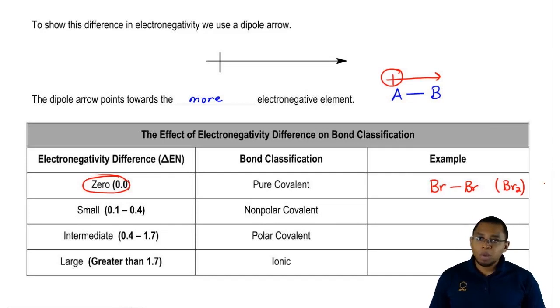If the difference is small between 0.1 and 0.4, then we call it a nonpolar covalent compound or nonpolar covalent bond. A good example we just saw is carbon and hydrogen. When we subtract their differences, we get a number of 0.3. So a compound could be CH4.